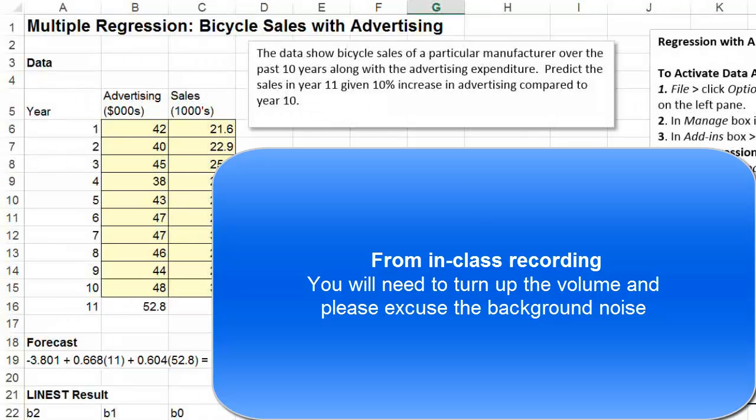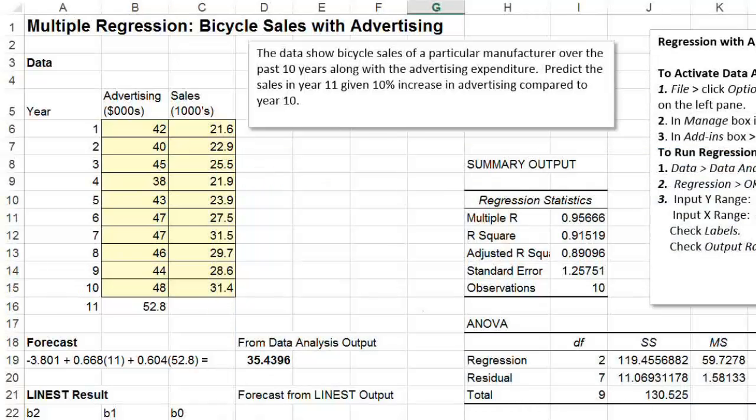So we have here now the two factors to account for. We've got the advertising and we've got the year we are in. And now we're going to use those two factors to predict the sales. This time we can't just use the intercept and the slope because those are only good for when you have one independent variable. Here you have two independent variables, the advertising and the year. So now we've got to do something else, something completely different.